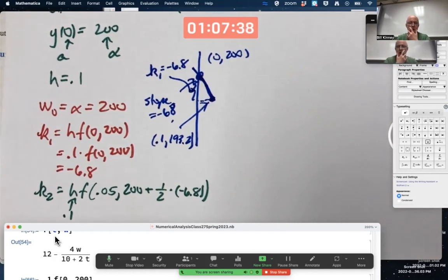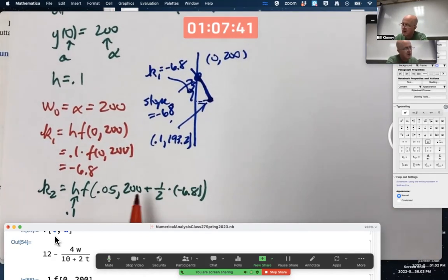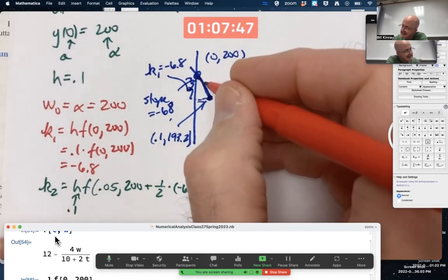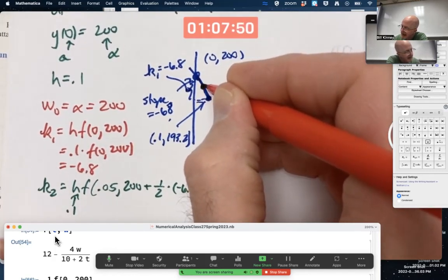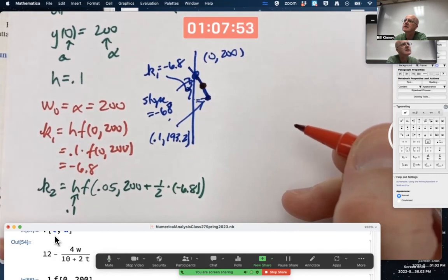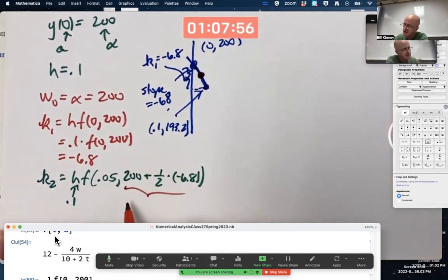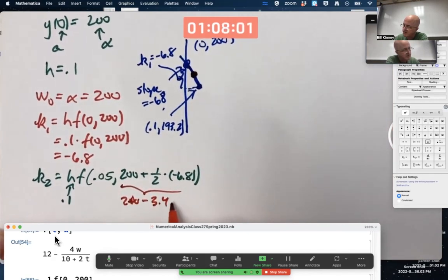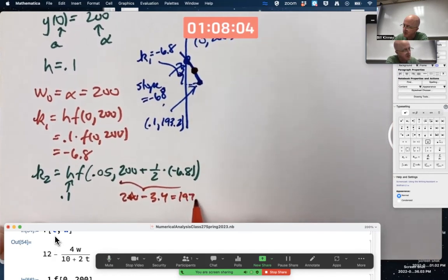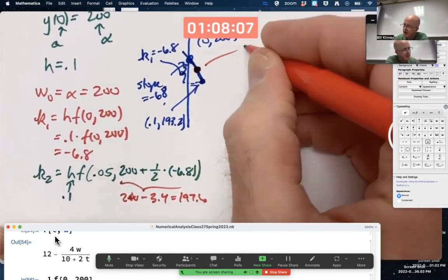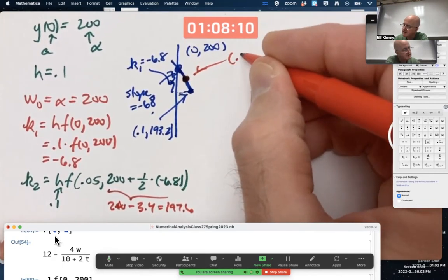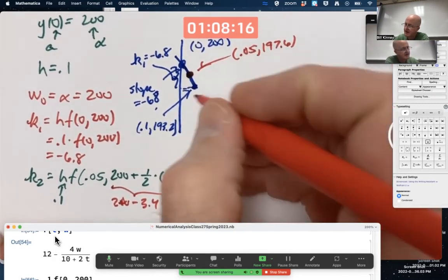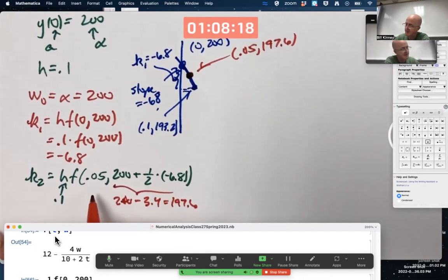In figuring out K2, this point that you're plugging into F is really the second coordinate or the coordinates of this point halfway along that line. This simplifies to 200 minus 3.4, which is 196.6. The coordinates of that point are (0.05, 196.6). We're plugging that point into F and finding the slope there and multiplying times 0.1.